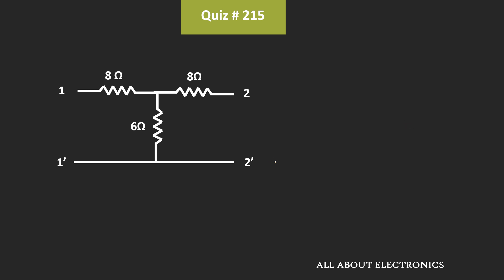That means for the given T network, the Z11 and Z22 are 14 ohm while Z12 and Z21 are 6 ohm. Now the two-port network is said to be reciprocal if Z12 is equal to Z21 and it is said to be symmetrical if Z11 is equal to Z22. And as you can see here, as both conditions are satisfied, so we can say that the given network is symmetrical as well as reciprocal.